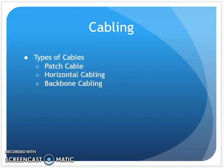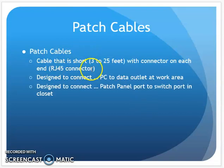All right, CNT 120, Chapter 2. We're now in the section where we talk about the different types of cabling we would have in a commercial or school building: patch cables, horizontal cable, and backbone cabling.